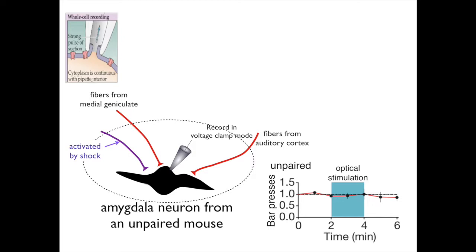Recall that voltage clamp means that the membrane potential is fixed — it is clamped at some value and is not allowed to change. When the fibers innervating the neuron are activated and release transmitter onto the amygdala neuron, the transmitter opens ligand-gated channels, allowing current to flow into the neuron. It is the amount of current flowing into the neuron that is measured in voltage clamp mode.